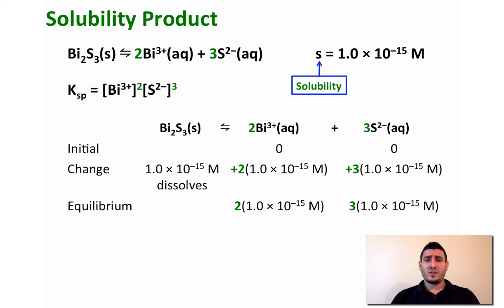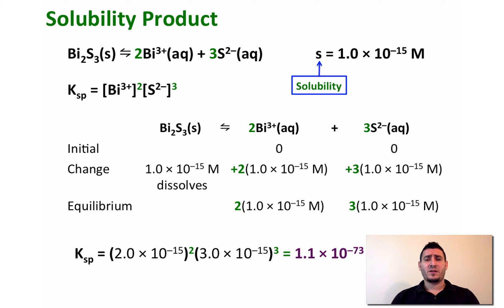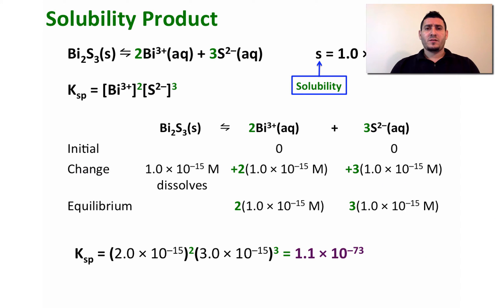To calculate the Ksp, we replace the concentrations of bismuth and sulfide with their equilibrium values, giving Ksp = 1.1×10⁻⁷³. Note that the units of Ksp change from one equilibrium to another, which is why we do not indicate any unit for Ksp. This very small Ksp value confirms that the solubility of bismuth sulfide in water is extremely small, as seen from the solubility value of 1.0×10⁻¹⁵.